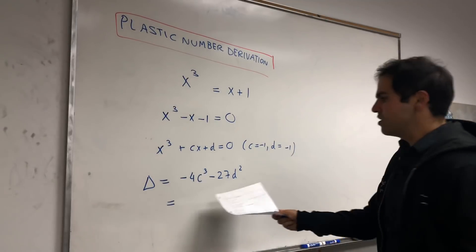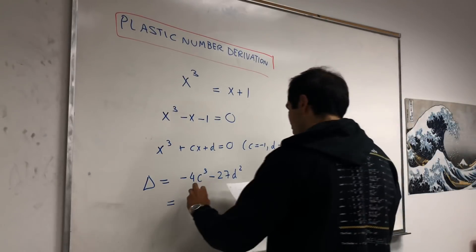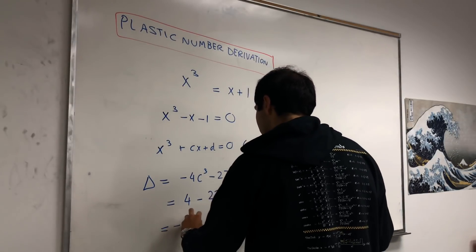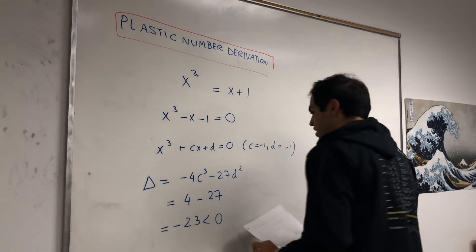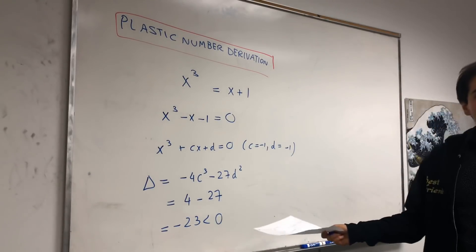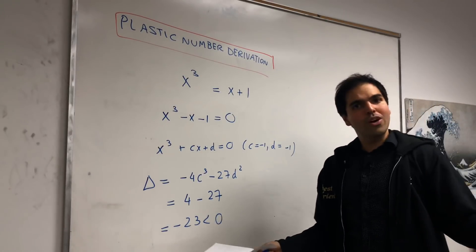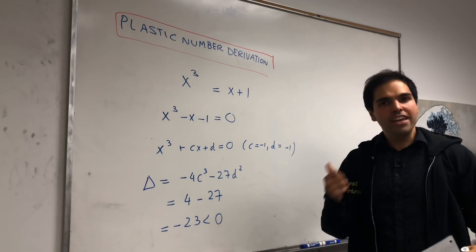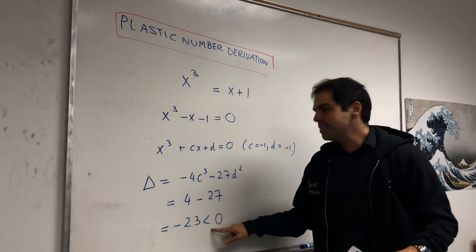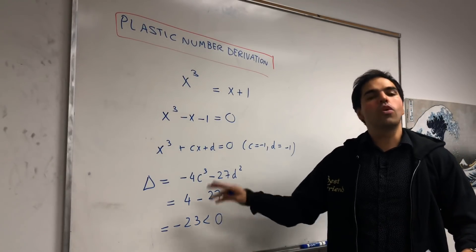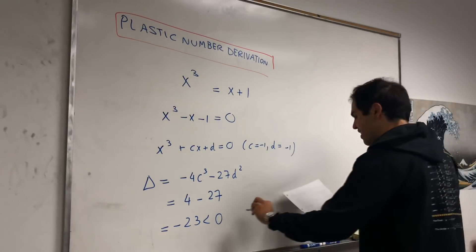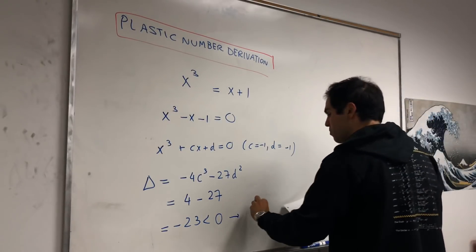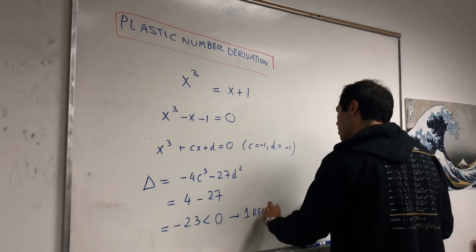Well, c cubed is minus 1, so times minus 4 is 4. And minus 27, and that equals minus 23, which is negative. And just like for negative discriminants, remember, for quadratic equations, if the discriminant b squared minus 4ac is negative, it means that there are complex solutions. And same here. If this were positive, there would only be real solutions. But because this is negative, there is still one real solution, because it's cubic, but two complex ones. So, one real and two complex.